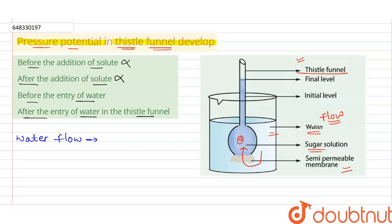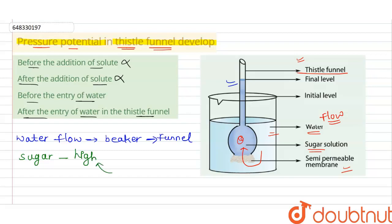The water flows from the beaker towards the funnel. At that time, when water is flowing from the beaker to the funnel, pressure potential will be created because the sugar solution is of high concentration in the funnel. The water moving into the sugar solution is at low concentration compared to the sugar solution.